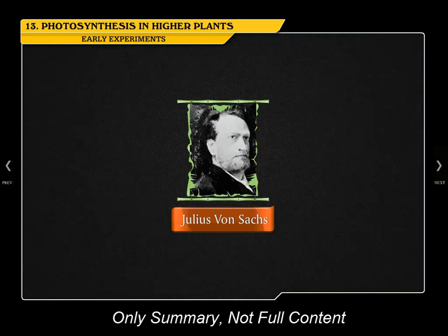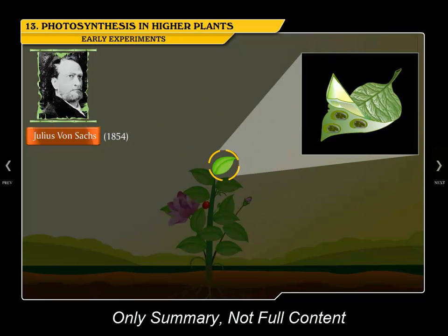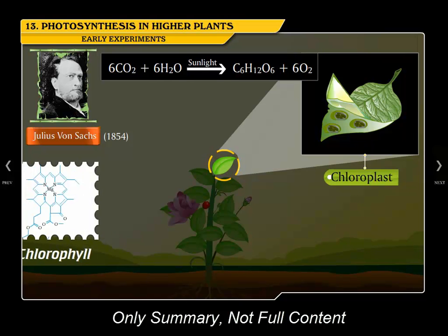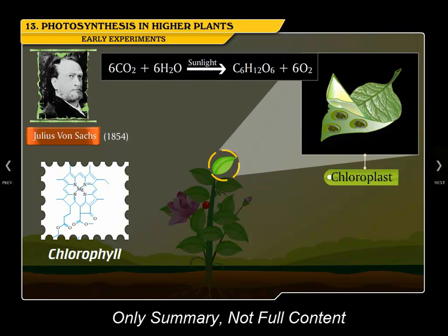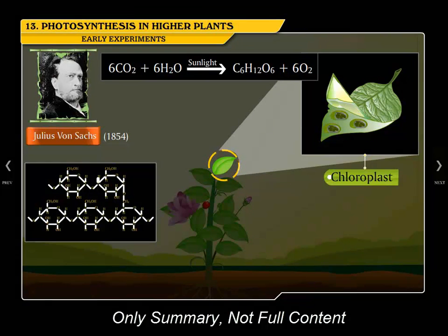In 1854, Julius von Sachs proved that plants produce glucose in their specialized structures called chloroplasts with the help of chlorophyll. He also concluded that glucose is stored as starch.